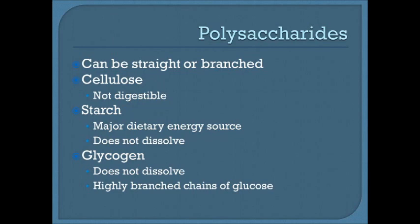Polysaccharides can be straight or branched, which determines their chemical properties. Cellulose is found in cell walls of plants, making their walls rigid for protection. Humans cannot break down cellulose because we lack the enzyme cellulase, which herbivores have. Cellulose is found in high quantities in sturdier vegetables — like celery — but we can use it for fiber.